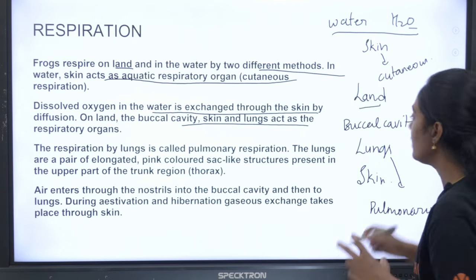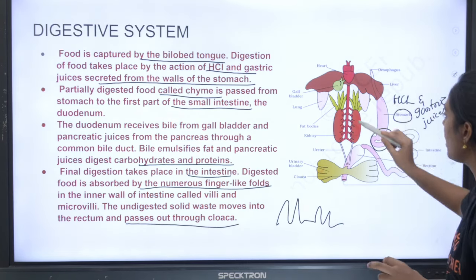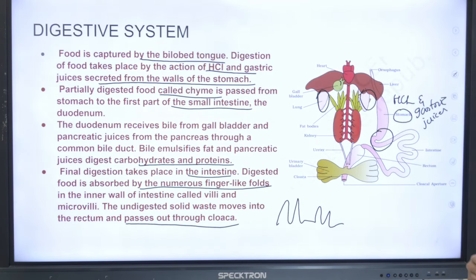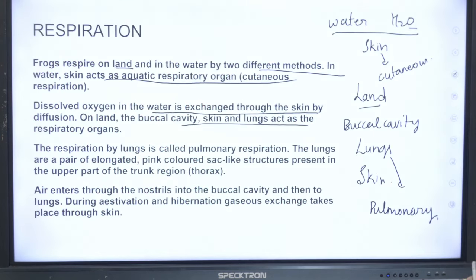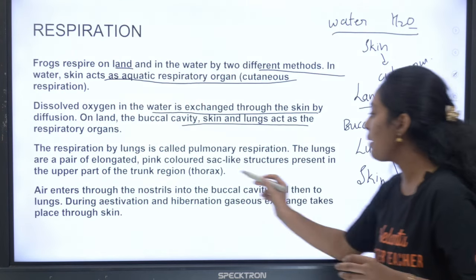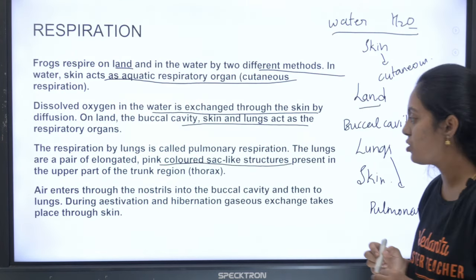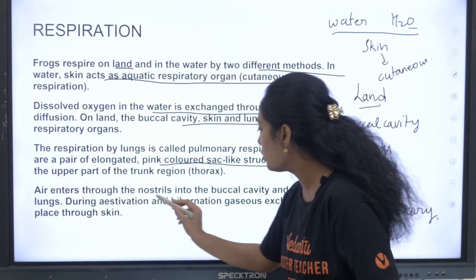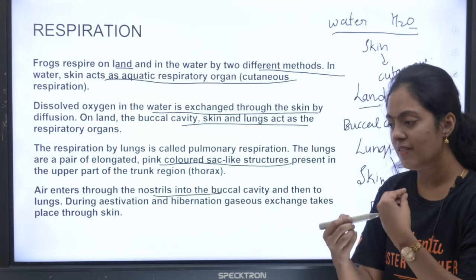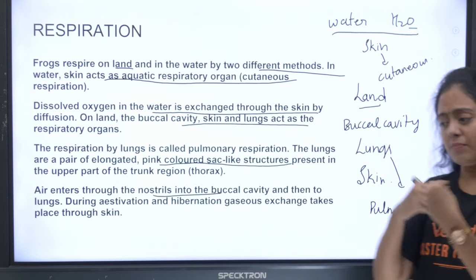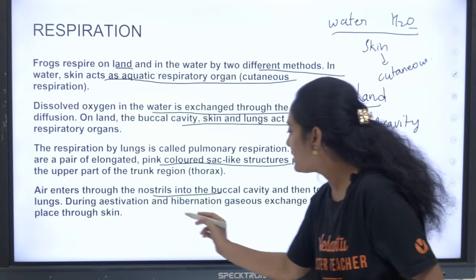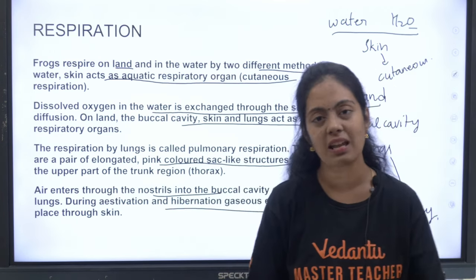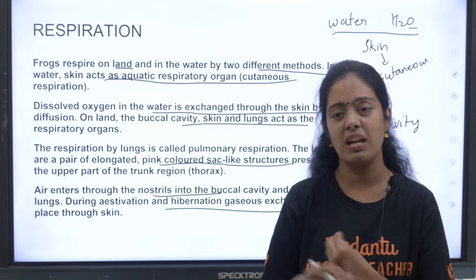The lungs are pale pink coloured organs present in the upper part of the trunk. Air enters through the nostril into the buccal cavity and then into the lungs. During estivation and hibernation, gaseous exchange takes place through the skin.